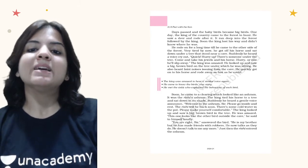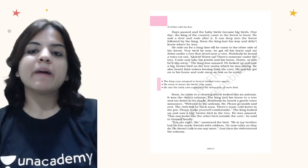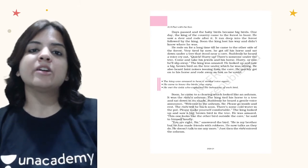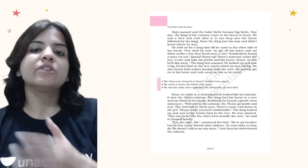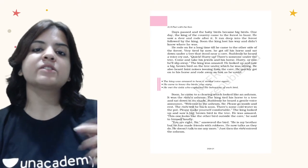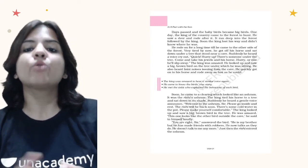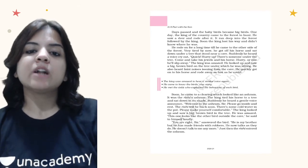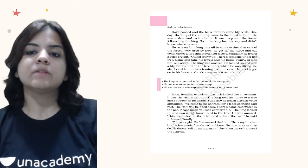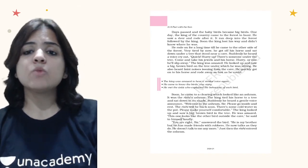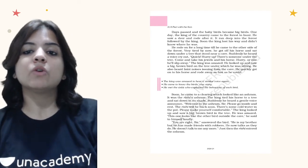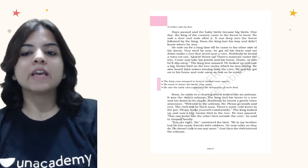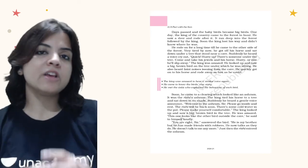He rode on for a long time till he came to the other side of the forest. Very tired by now, he got off his horse and sat down under a tree that stood near a cave — the same tree where the first bird had taken shelter, near the cave of the robbers. Suddenly he heard a voice cry out: 'Quick, hurry up! There is someone under the tree. Come and take his jewels and his horse. Hurry or else he will slip away.' The king was amazed — he looked up and saw a big brown bird. Hearing faint noises from the cave, he quickly got on his horse and rode away as fast as he could.